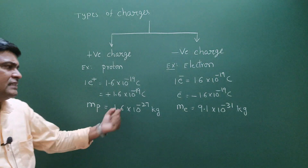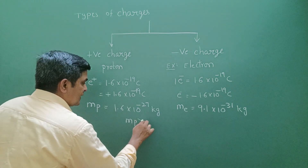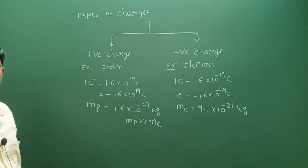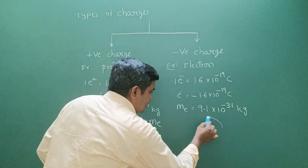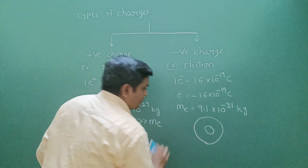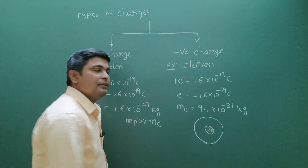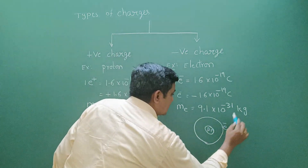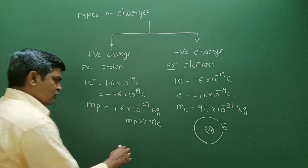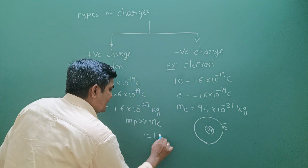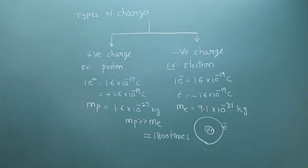Comparing the two, the mass of the proton is far greater than the mass of the electron. In the structure of the atom, the nucleons — proton and neutron — are in the nucleus and are heavier, while the electron revolves in the orbits and is lighter. The mass of the proton is approximately 1800 times greater than the mass of the electron.